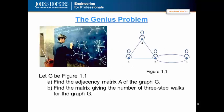Many of you may have seen the movie Good Will Hunting. In this movie, there was a problem known as the genius problem. The genius problem is provided here: Find the adjacency matrix A of the graph G, and find the matrix giving the number of three-step walks for the graph G. This problem may seem unfamiliar to you now, but by the end of the course, possibly not the end of this lecture, it will be a simple problem.